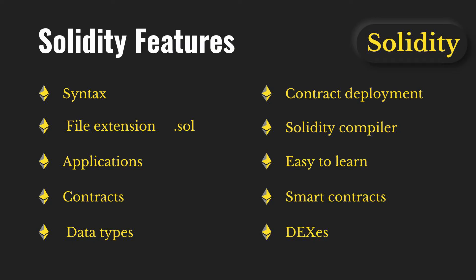The fourth point is contracts. The Solidity programs you write follow object-oriented programming — similar to classes in JavaScript, but with a couple of access controls: access to variables, modifiers, and functions. It follows the same class structure you're familiar with in JavaScript. So when someone asks what structure Solidity follows, you can say it follows an object-oriented structure for writing contracts.